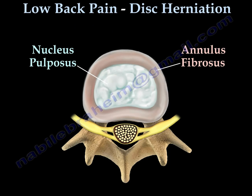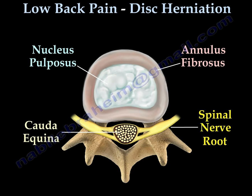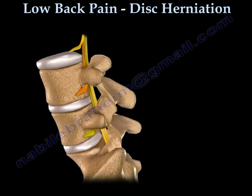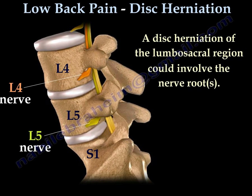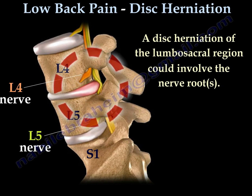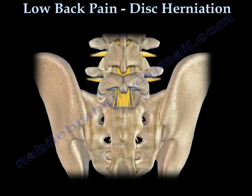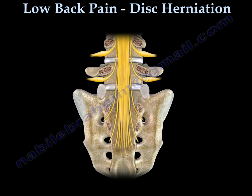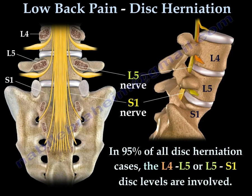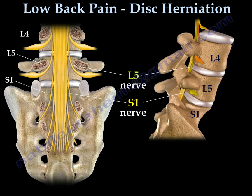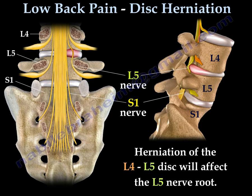Behind the disc lies the spinal nerve root and the cauda equina. A major disc herniation of the lumbosacral region could affect the nerve roots. In about 95% of all disc herniation cases, the L4-L5 or L5-S1 disc levels are involved. Herniation of the L4-L5 disc will affect the L5 nerve root.